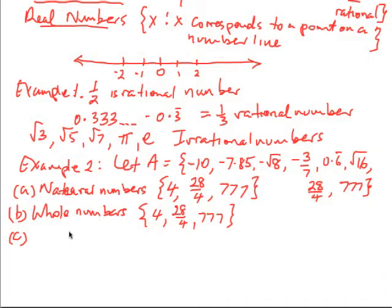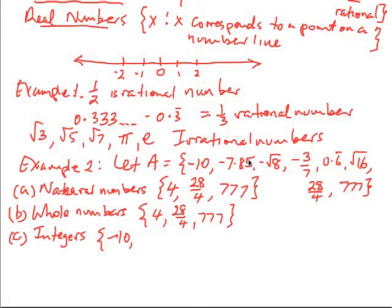For part C, let's find the integers. All natural and whole numbers are integers, so those are included. Are there others? We can have some negatives. Negative 7.85 is not an integer — it's more like a fraction, 885 over 100. Negative square root of 8 is not an integer. Negative three sevenths is not an integer. And 0.6 recurring is not an integer. So the integer set here is the same as the whole number set: 4, 7, and 777.